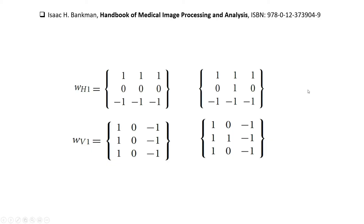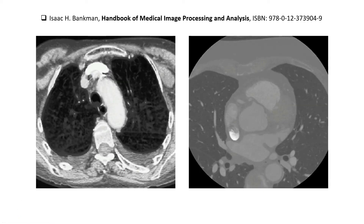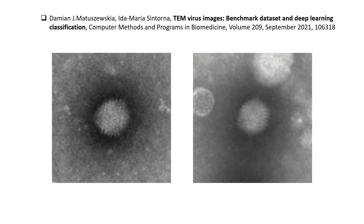Now let's see how it works on real kernels and images. Here we have horizontal and vertical kernels, and also the version when one is added to the central coefficient. We also have these computed tomography images, which are found in the Handbook of Medical Image Processing and Analysis. We are also going to use images from TEM, which means Transmission Electron Microscopy.